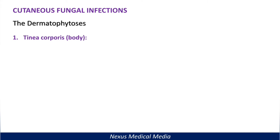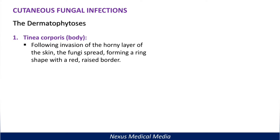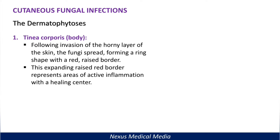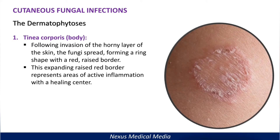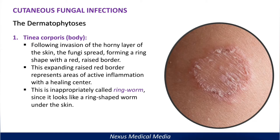The first infection is tinea corporis — 'corporis' meaning body. Following invasion of the horny layer of the skin, the fungus spreads and forms a ring shape with a red, raised border. This expanding raised border represents areas of active inflammation with a healing center. It is sometimes called ringworm, which is a misnomer since it is caused by a fungus, not a worm. Tinea corporis is found on the body and causes this ringworm appearance.